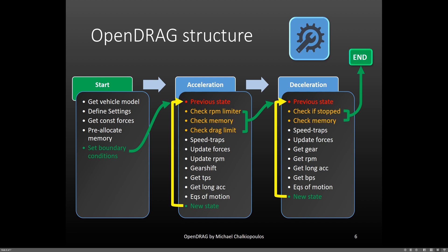If all these check out fine, then it checks for speed traps, updates the forces and the RPM, and goes on to the gearshift check. After, it calculates the needed throttle position to not overload the tires, calculates the final longitudinal acceleration, and uses the equation of motion to calculate the next state. This new state now becomes the previous state, and the loop continues. When we have hit top speed and there is more memory left, the code starts the deceleration procedure. Again, it checks if the car has stopped or if the memory is out. Then it looks at the same speed traps, updates the forces, the gearshifts, the RPM, the longitudinal acceleration, and the brake pressure. Then it uses again the equations of motion to compute the next vehicle state. When the vehicle has stopped, the simulation is completed.